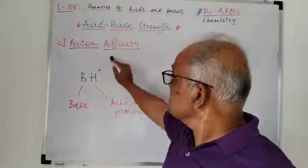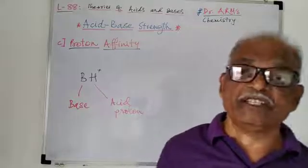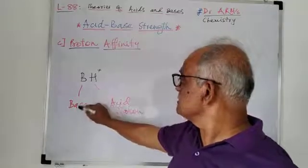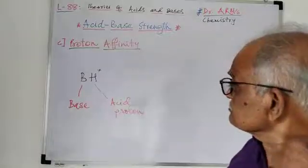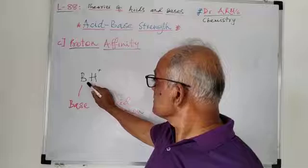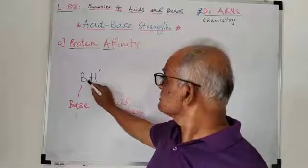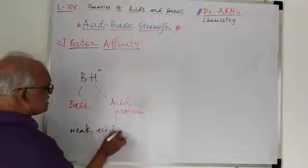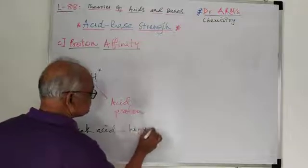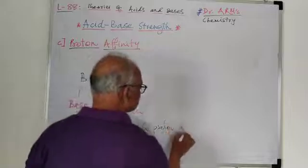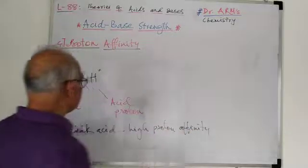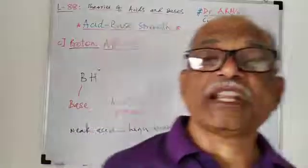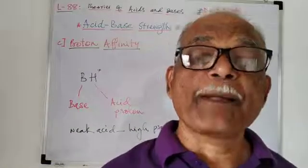A higher value of proton affinity shows that the species is more stable. If BH+ is a weak acid, then it has high proton affinity. If the acid is strong, then its proton affinity is very low or small.